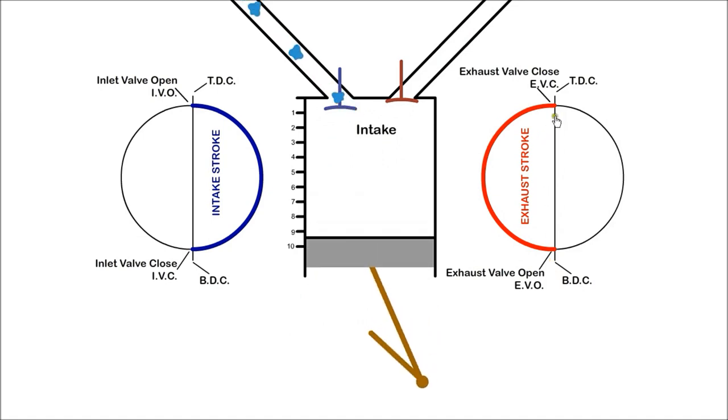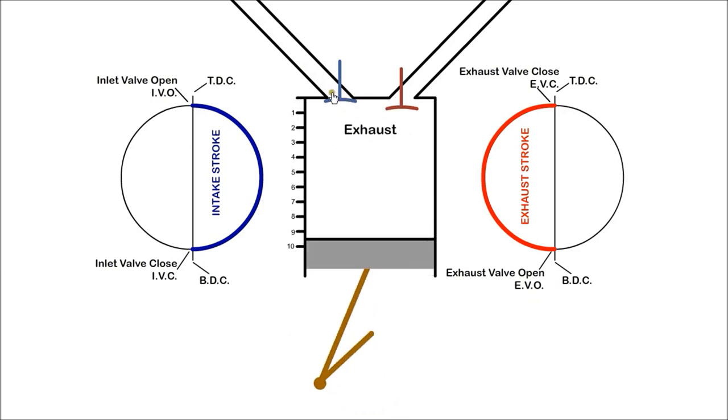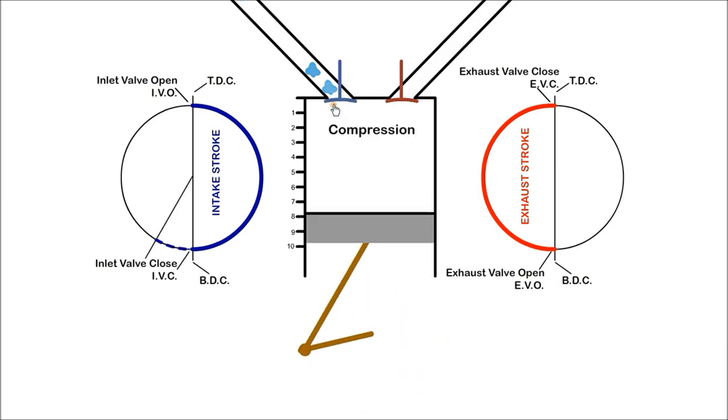If we look at the inlet valve closing at BDC, we see that a flow of air is blocked behind the valve from entering the cylinder. It would be much better to delay closing the valve until the increasing cylinder pressure stops the flow. Then we get more air into the cylinder.